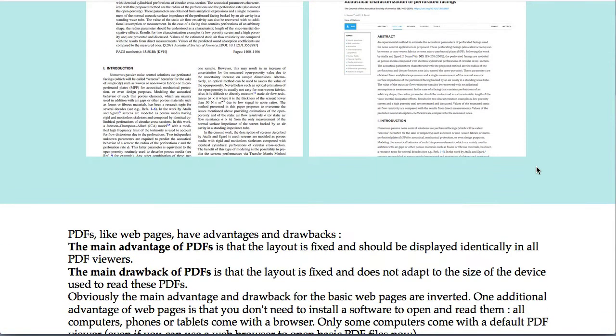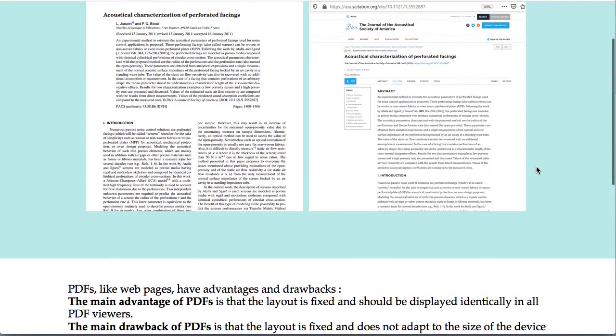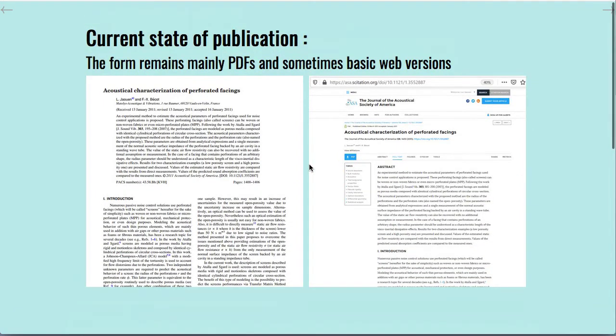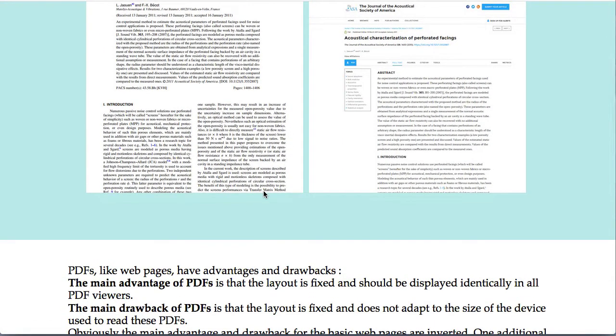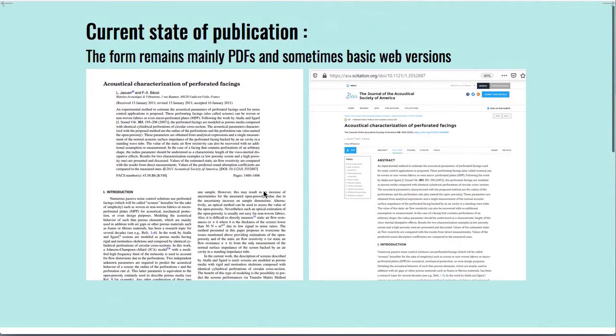So there's advantages and drawbacks for using PDF. The main advantage of PDF is that the layout is fixed so it should appear exactly the same in any kind of PDF viewers. But it's also the main drawback because the layout is fixed and so you can't adjust the size of a sentence to the size of your screen if you're looking at this paper with your phone for example.